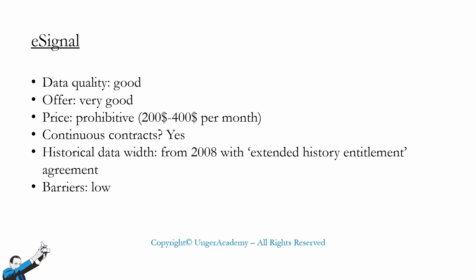eSignal has three types of offers: Classic, Signature, and Elite. We systematic traders will need Elite, which is the most expensive and costs around $390 per month, plus some extended history entitlement to have data up to 2008. The continuous contracts are featured, so eSignal would certainly be potentially usable, and the barriers to entry are really very low. The only problem is the cost, which is very prohibitive — between $200 and $400 per month for systematic traders.